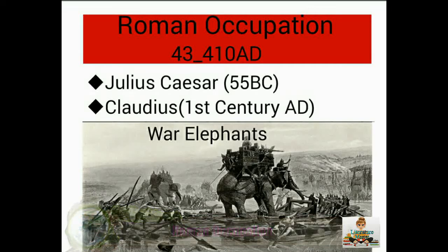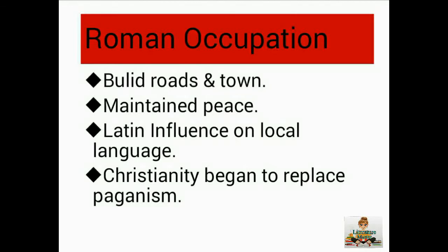Now let's have a look at Roman occupation. Britain was an attractive target for Rome because of material wealth, particularly mines. Julius Caesar began invasion in 55 BC and again attacked in 54 BC but failed to conquer the island. By the first century AD, Claudius attacked with 38 war elephants and succeeded in establishing Roman rule in 43 AD. Britannia became a province of the Roman Empire. It was a peaceful invasion — native people were not killed. Romans established military camps that eventually became towns, introducing Roman civilization and culture. They maintained peace; Christianity began to replace paganism, and Latin heavily influenced the local language as it was the language of the ruling class.